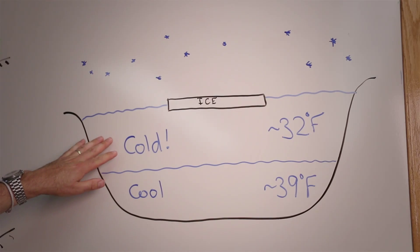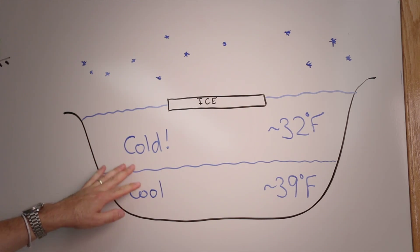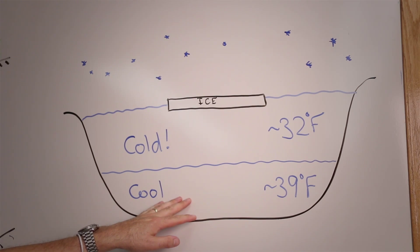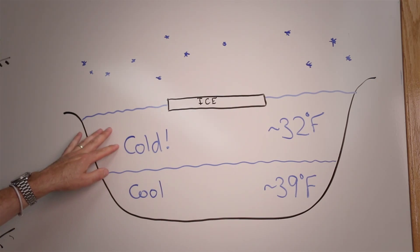In the winter, we can actually have cold water, very cold water at about 32 degrees Fahrenheit, sitting on top of slightly cooler, about 39 degrees Fahrenheit, slightly denser water below.